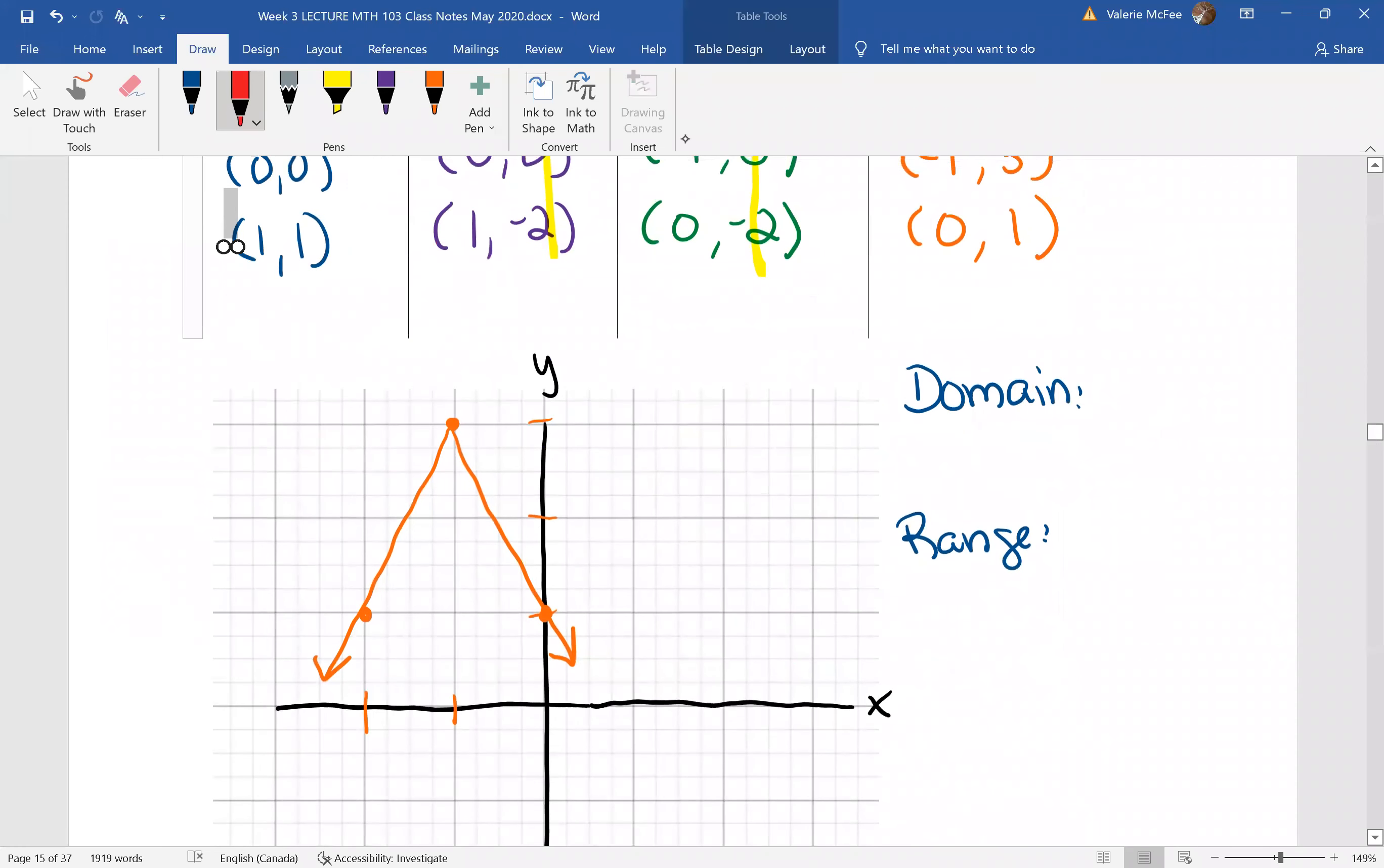That's what happened here. This absolute value function is now reflected down. It opens down instead of up. We shifted it up 3 units. And we shifted it to the left 1 unit.